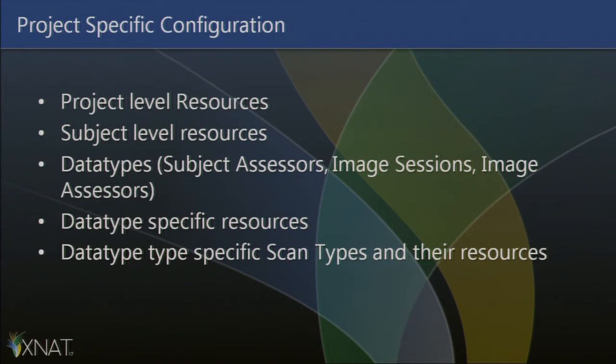Let's look at what can be synced. You can have project-level resources that you define to be synced. You can have subject-level resources — essentially you give the label names of those resources. You can define data types that get synced, as well as data-type-specific resources and data-type-specific scan types and their resources. So for a project, you have control over various entities and can decide what gets synced.